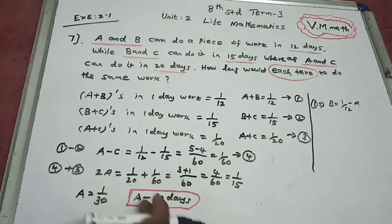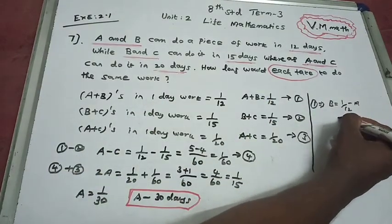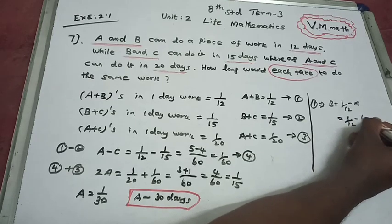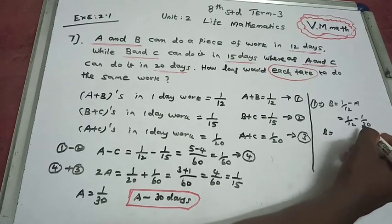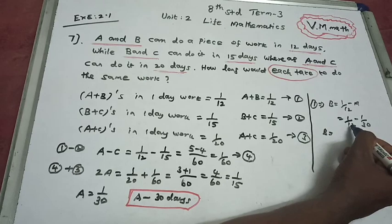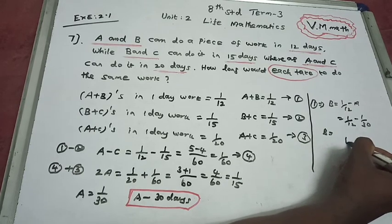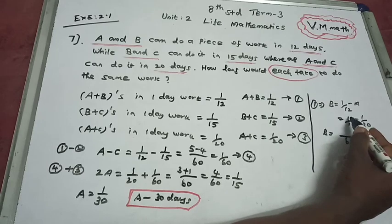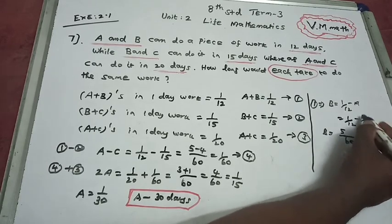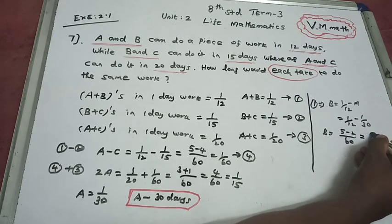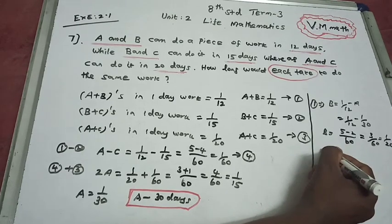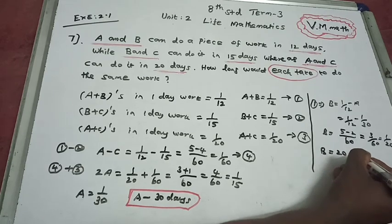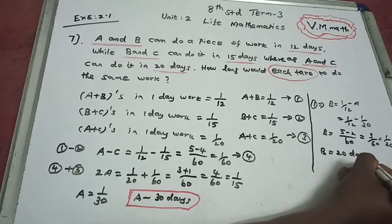Since A equals 1/30, we find B: 1/12 minus 1/30. LCM is 60: 5/60 minus 2/60 equals 3/60, which is 1 by 20. So B equals 20 days.